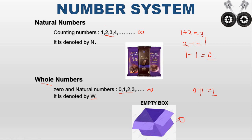If you subtract two whole numbers, like 3 minus 0, the answer is 3, which is also a whole number. But in some subtractions, you will not get a whole number. For example, 4 minus 6 gives minus 2. Here, 4 and 6 are whole numbers, but minus 2 is not a whole number. So we need to move on to another set of numbers.